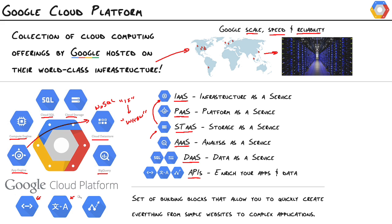You have the Translation API — a very simple API to use to translate your data. And you also have the Prediction API, which is chock full of machine learning algorithms to help you do things like predict future trends based on historical data. That's just scratching the surface as far as APIs go. Think of the Google Cloud Platform as a big box of Legos that you can use to build whatever you want, big or small.